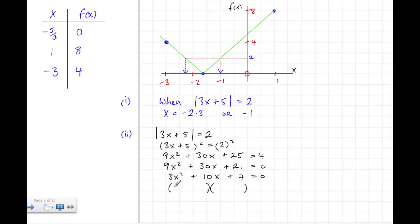Then factorize this so we can solve it. This gives us 3x plus 7 equals 0, or x equals minus 7 over 3, which is minus 2 and a third as we thought. The other value is x equals minus 1. This matches up with what we found geometrically.